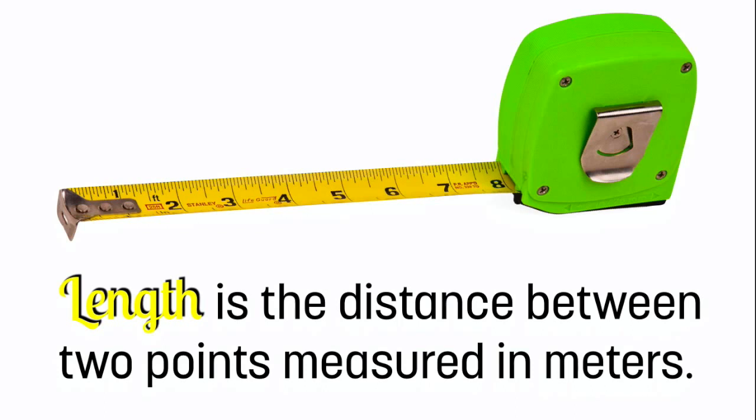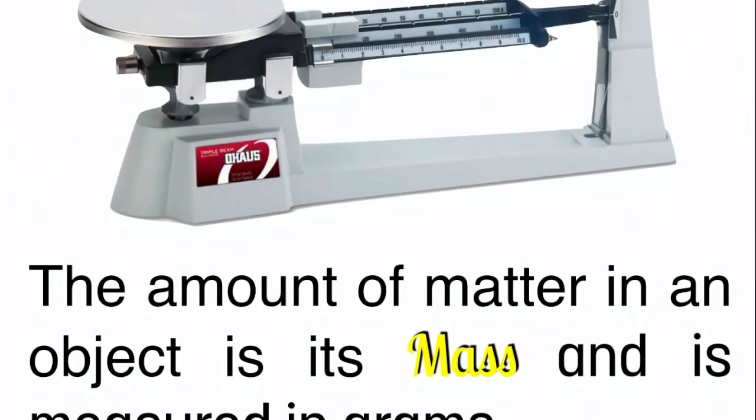Another quantity is mass, how much matter is in an object. That's measured in grams, and in the picture you can see a triple beam balance. When we measure mass, we're really taking an account of how many atoms are in something.